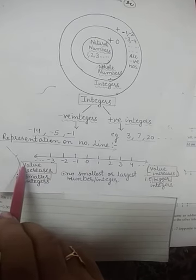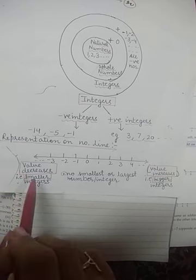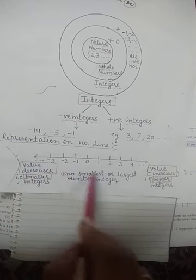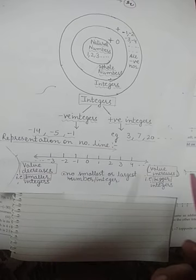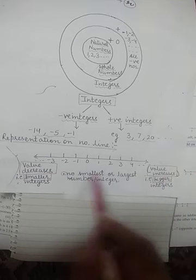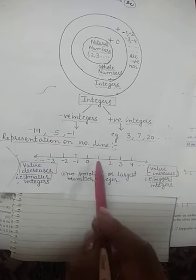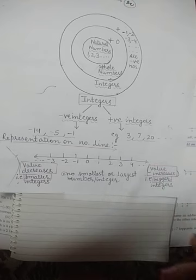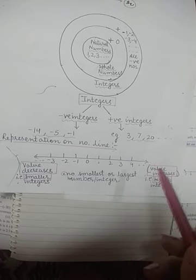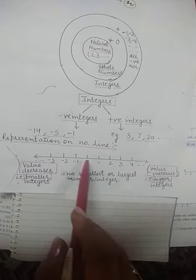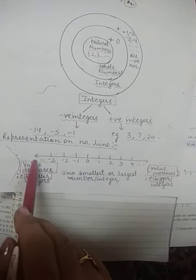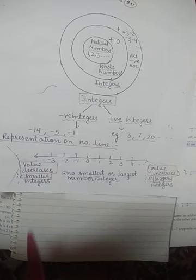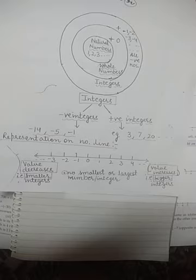There is no smallest or largest integer. As we move towards the right we keep getting larger and larger numbers — there is no fixed largest number. As we move towards the left we keep getting smaller and smaller numbers — there is no fixed smallest integer.